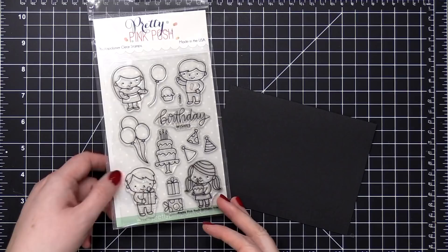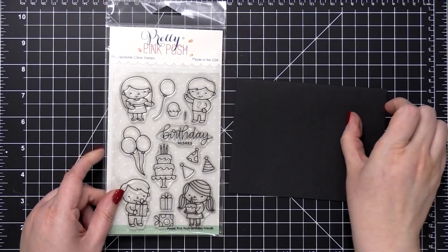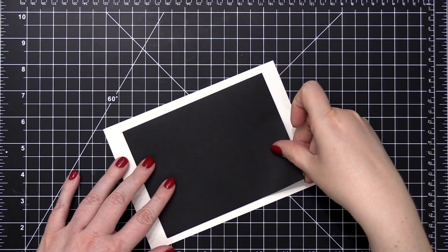Hi everyone, Kristina Werner here. Welcome to another video for simonstastamp.com. Today I'm going to be using this stamp set from Pretty Pink Posh called Birthday Friends, and I'm also going to use this black envelope from Simon to create a really fun birthday mail art envelope.